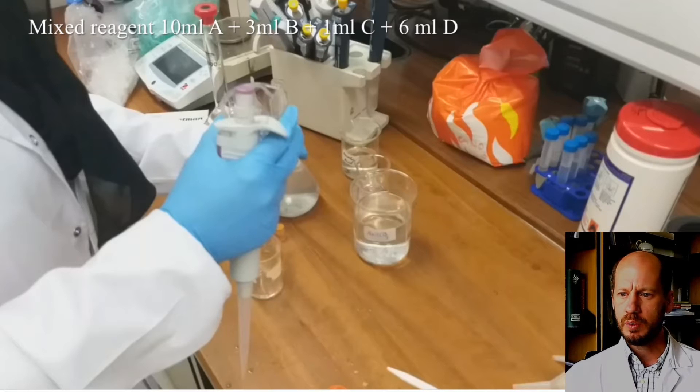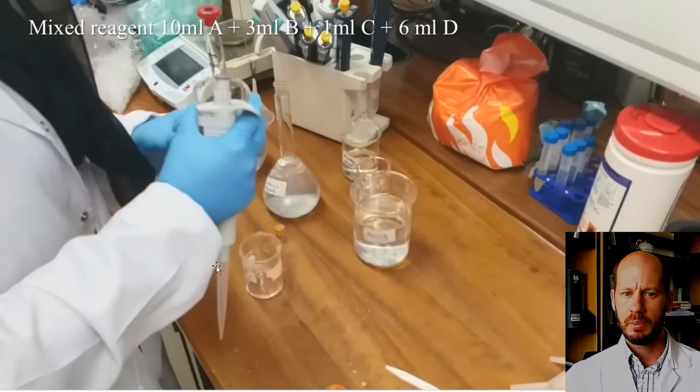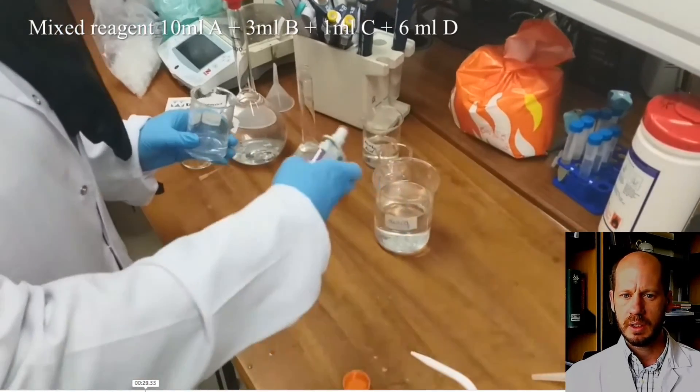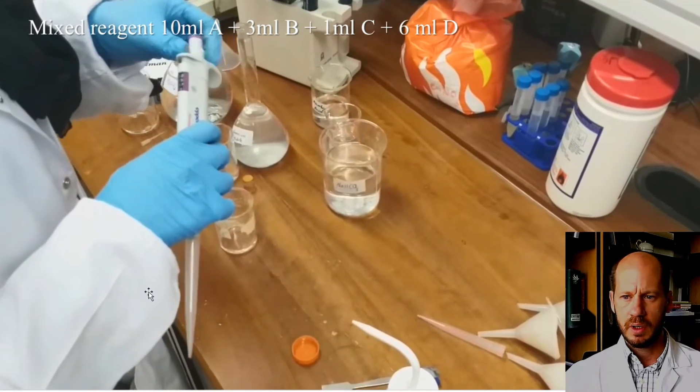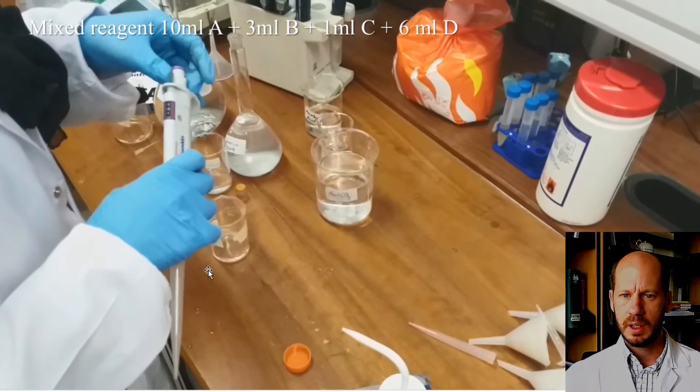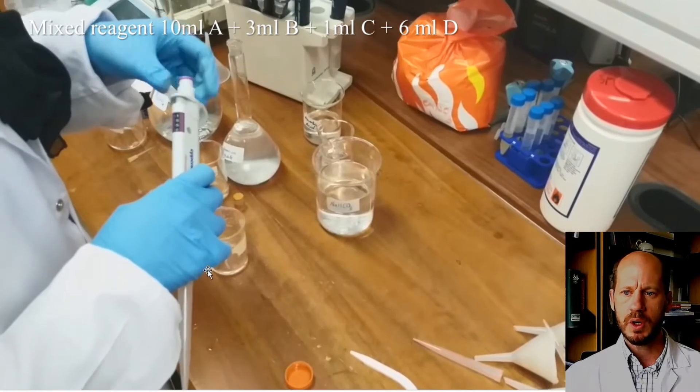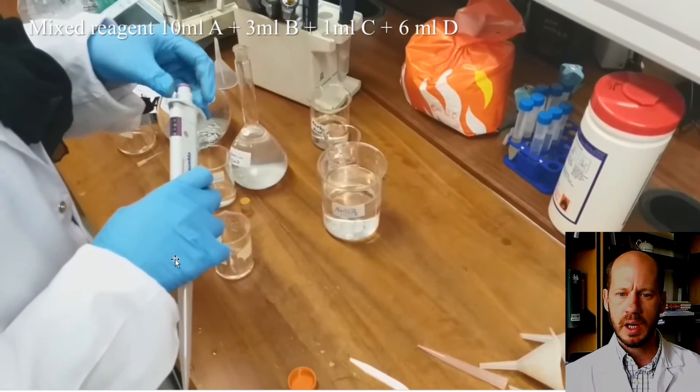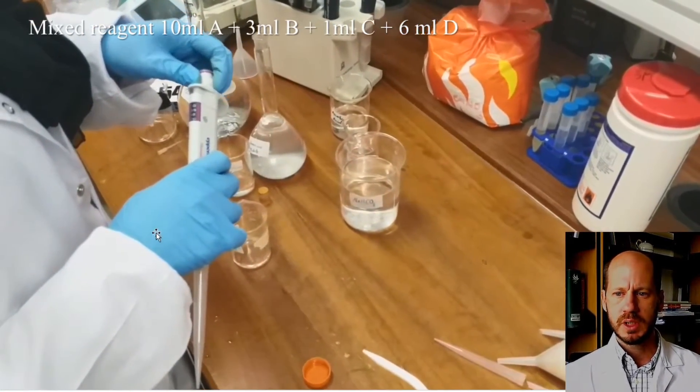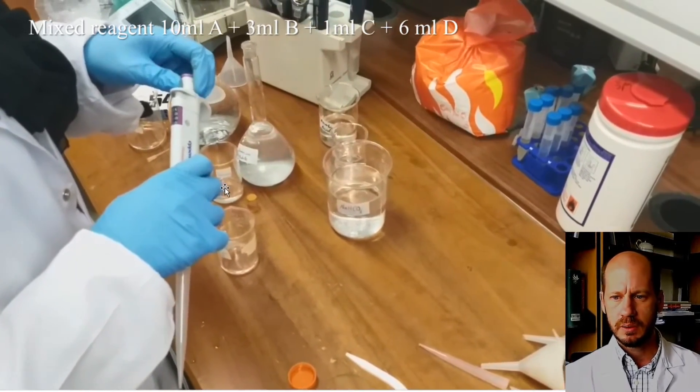After that, we do what we did last time. Just prepare the mixed reagent, which corresponds to 10 ml of sulfuric acid, 3 ml of the ammonium molybdate, 1 ml of the potassium antimony tartrate, and 6 ml of the ascorbic acid. This is Lilua preparing here this mixed reagent for adding that to the sample. Once we have the mixed reagent and our extract, we proceed and measure it on the microplate, the plate reader.